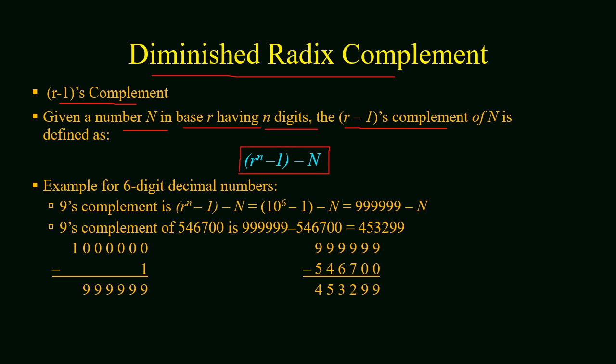In case of decimal number system, the diminished radix complement will be 9's complement because r equals 10, and subtracting 1 gives us 9. If we have a 6-digit decimal number, its 9's complement will be (r^n - 1) - N, which equals (10^6 - 1) - N.